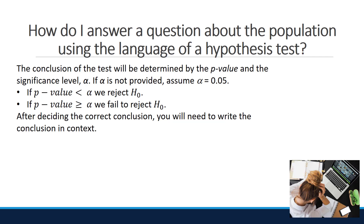How do we conclude a hypothesis test for a difference between proportions? The conclusion of the test will be determined by the p-value and the significance level alpha. If alpha is not provided, we assume alpha equals 0.05. If the p-value is less than alpha, we reject the null. If it is greater than or equal to alpha, we fail to reject the null. After deciding the correct conclusion, you will need to write the conclusion in context.